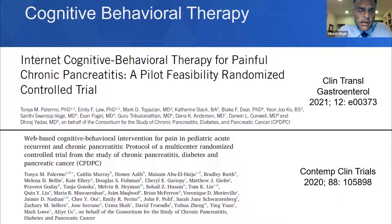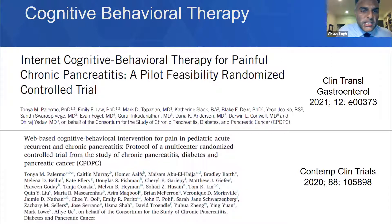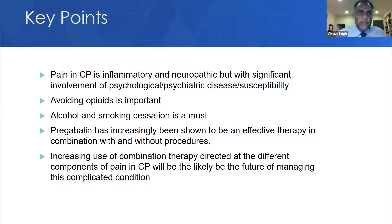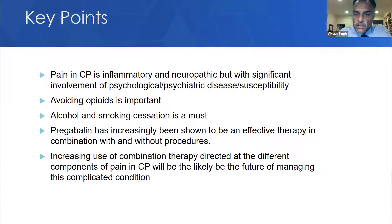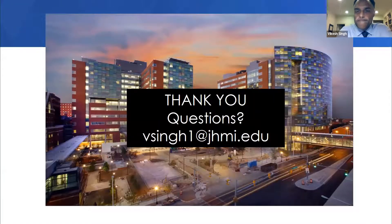The key points from this talk: pain in chronic pancreatitis is inflammatory and neuropathic, but with significant involvement of psychological and psychiatric disease and susceptibility. Avoiding opioids is important. Alcohol and smoking cessation is a must. Pregabalin has increasingly been shown to be an effective therapy in combination with and without procedures. And an increasing use of combination therapy directed at different components of pain in chronic pancreatitis will likely be the future of managing this complicated condition.